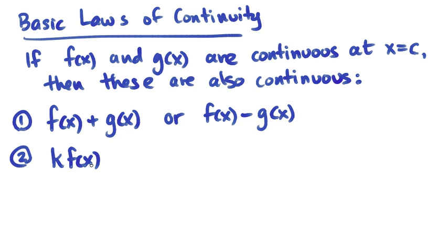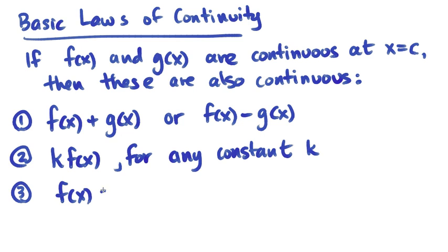The second one is multiplication rule. If you multiply by any constant. The third one is if you multiply those two continuous functions together.